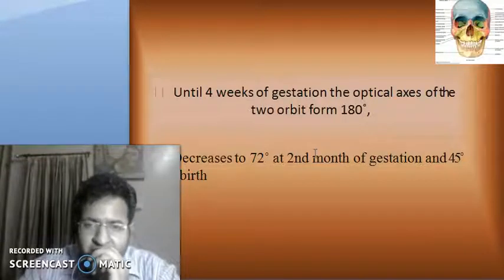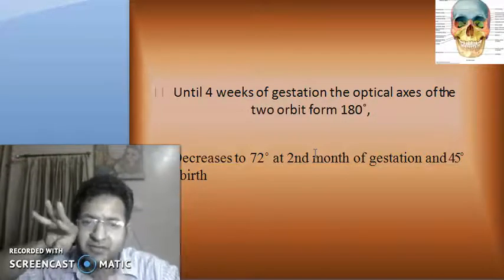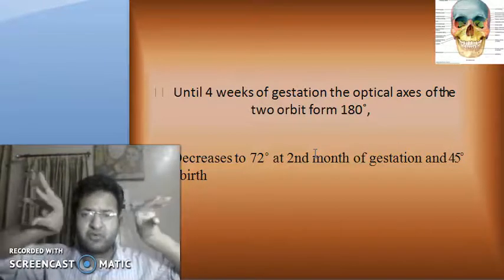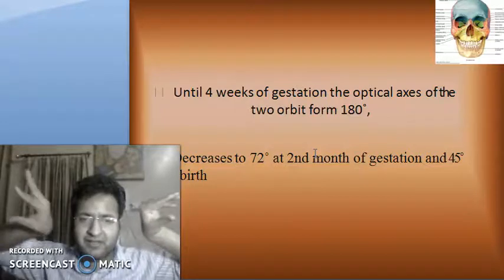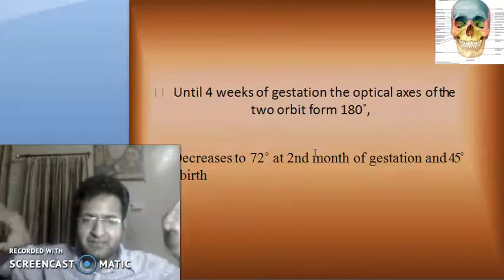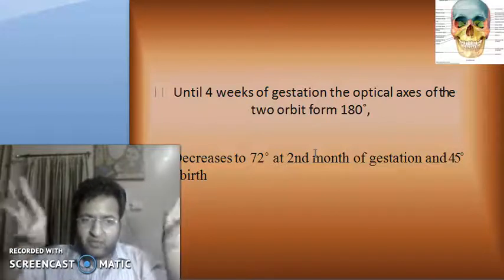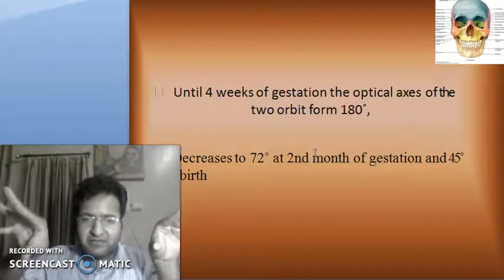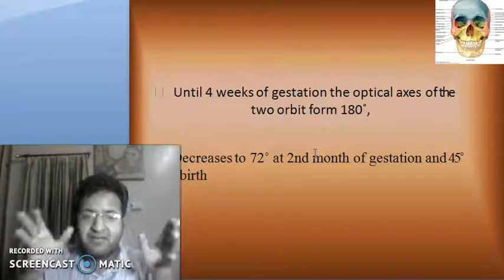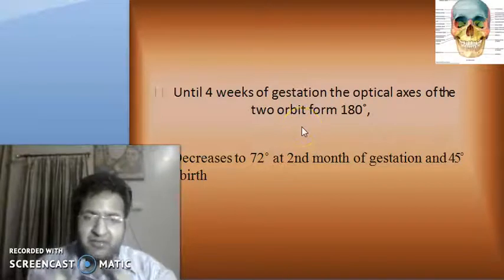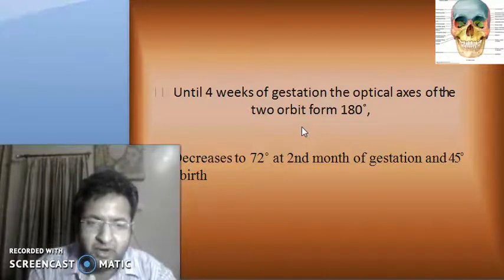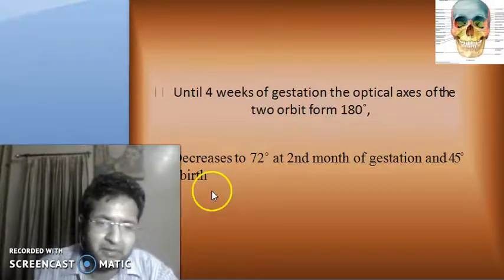Until four weeks of gestation, the optical axis of the two orbits form 180 degrees — that is, they face directly opposite to each other. This decreases to 72 degrees at the second month of gestation and 45 degrees at birth. That is, the adult 45-degree angle between the two orbital optical axes is achieved at birth.